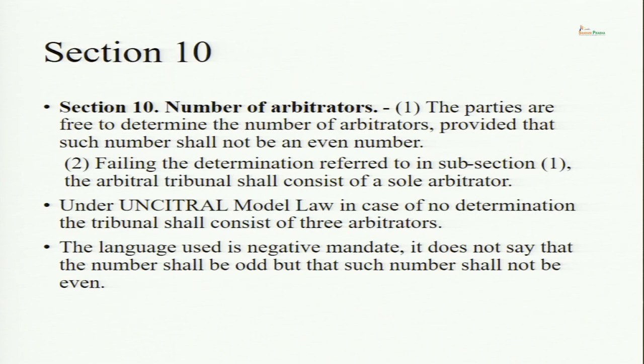Section 10 deals with the number of arbitrators. Parties are free to determine the number, but with a proviso: such number shall not be an even number. I could have written 'such number shall be an odd number,' but writing it as 'shall not be an even number' is a negative mandate — a stricter mandate. This indicates that although parties have freedom, it is curtailed, and there will never be an even number of arbitrators. The language very clearly suggests it is a strict mandatory provision.